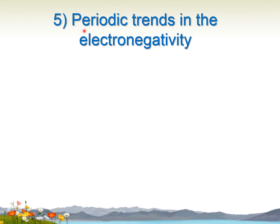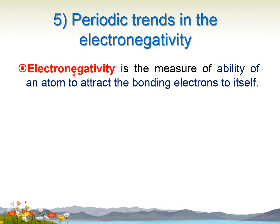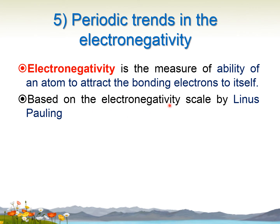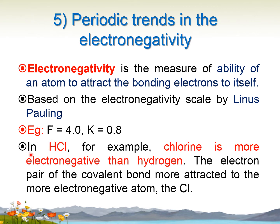Now, periodic trends in electronegativity. What is electronegativity? It is the measure of the ability of an atom to attract the bonding electrons to itself. Based on the electronegativity scale by Linus Pauling, fluorine F is equal to 4.0 while potassium K is equal to 0.8. Fluorine is the most electronegative element. In HCl, chlorine is more electronegative than hydrogen, and the electron pair of the covalent bond is more attracted to the more electronegative atom, which is chlorine.